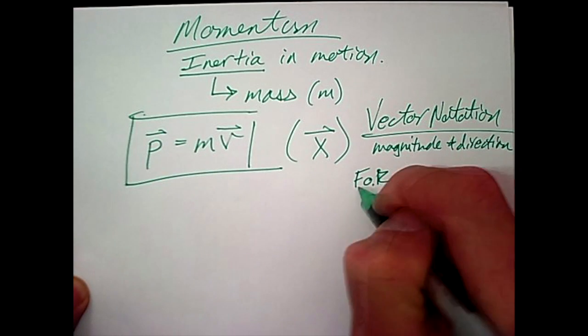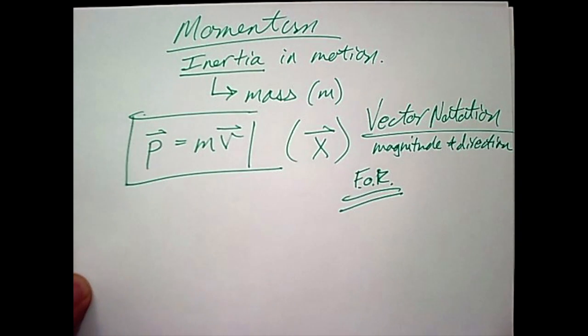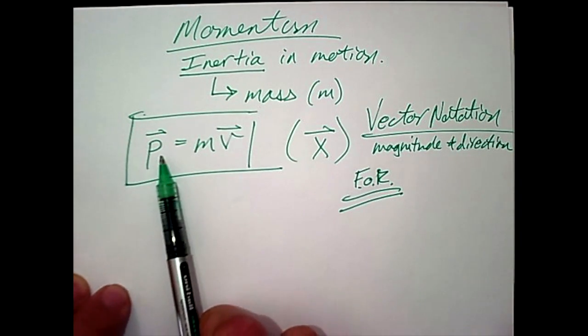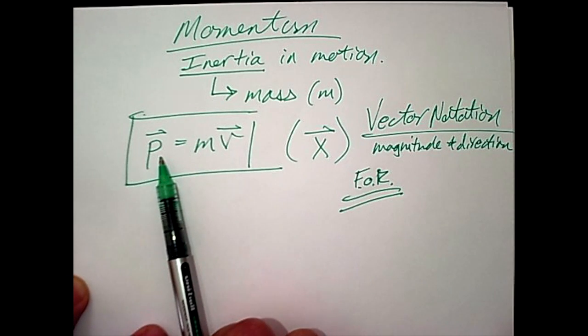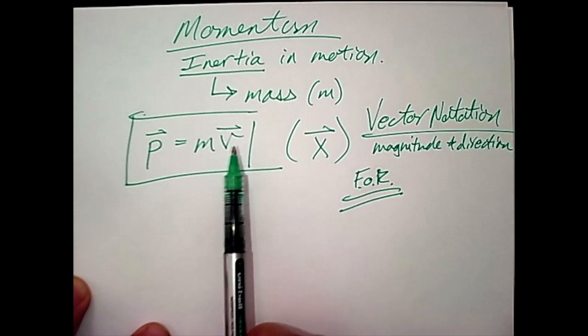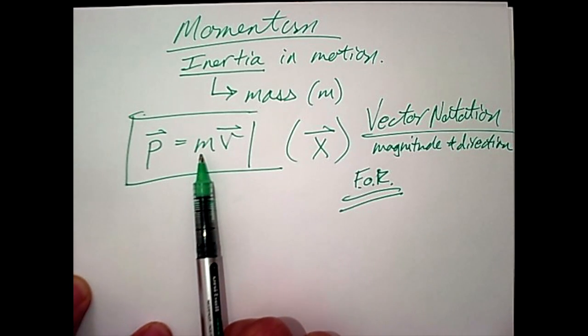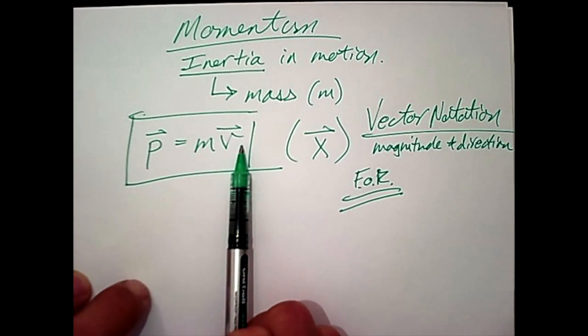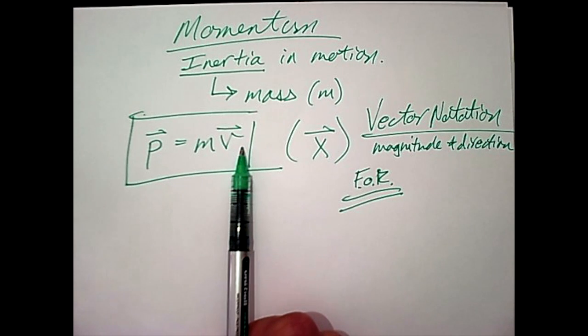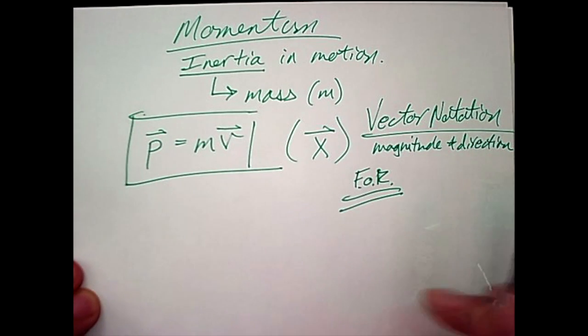And so the idea here is that momentum has a directional characteristic that is directly dependent upon the velocity. Obviously mass cannot have direction. And so v is the variable that is determining the momentum direction as well.